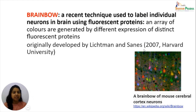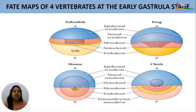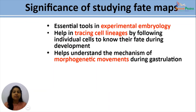Students, we are now in a position to describe the details of the fate maps of these four vertebrates, which we will take up when we study the gastrulation process in subsequent chapters. Fate maps are an essential tool in studying experimental embryology — only if we know the fate of each cell and which organs they will develop into can we detect the behavior of each cell and plan our experiments in embryology. Fate maps also help in tracing cell lineages by following individual cells to know their fate during development, and studying fate maps helps us understand the mechanism of morphogenetic movements during gastrulation.